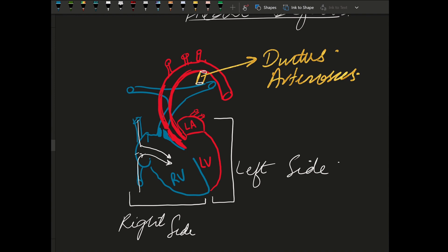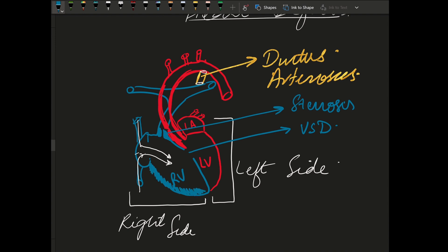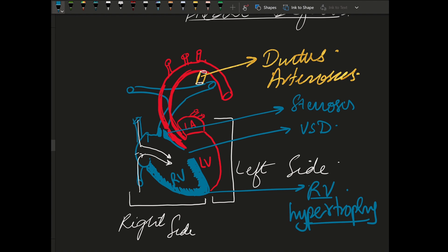There is a VSD. The right side of the heart has to pump against resistance from the stenosis, and through the VSD it hypertrophies. The blood from the superior vena cava and inferior vena cava goes into the aorta — that is known as overriding of the aorta.